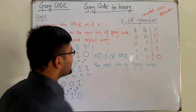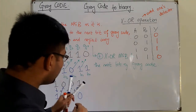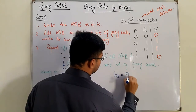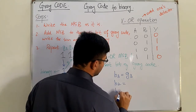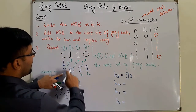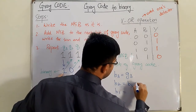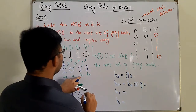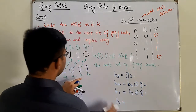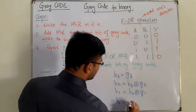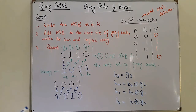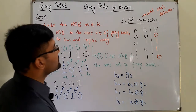Generalizing gray code to binary: b3 = g3. Then b2 = b3 XOR g2, b1 = b2 XOR g1, and b0 = b1 XOR g0.